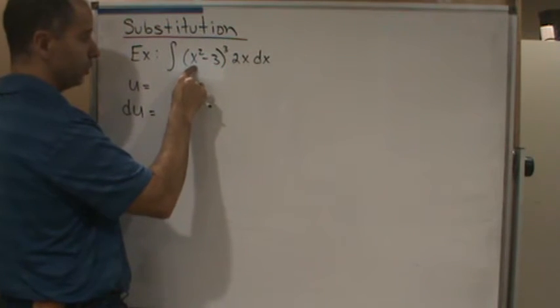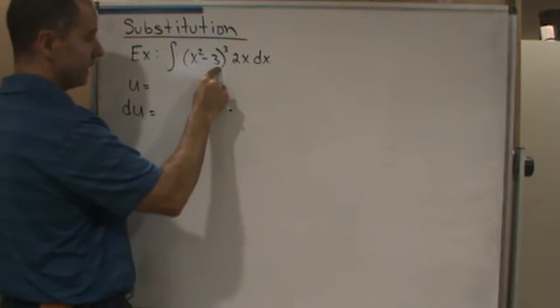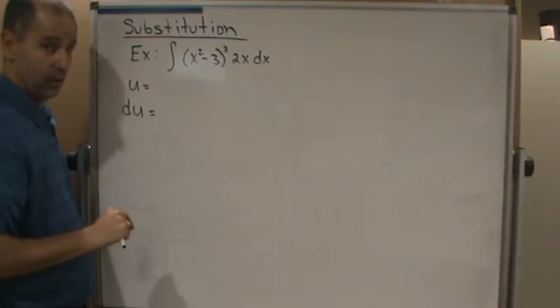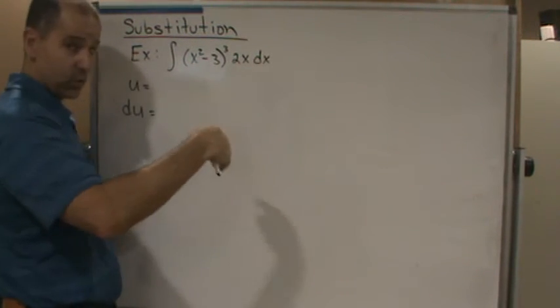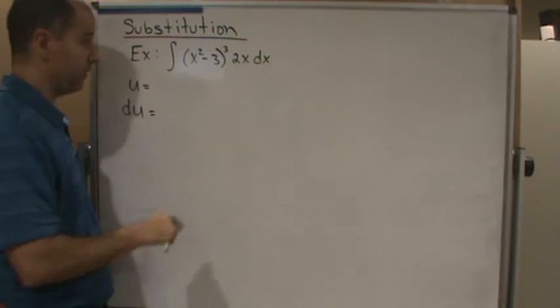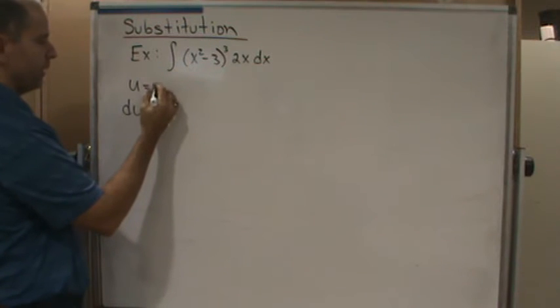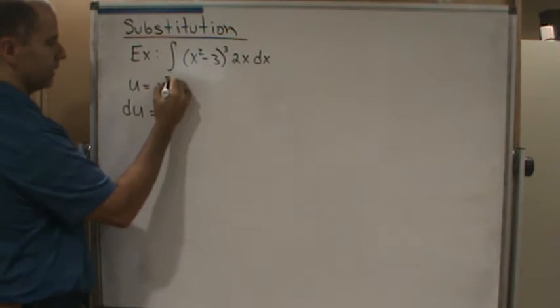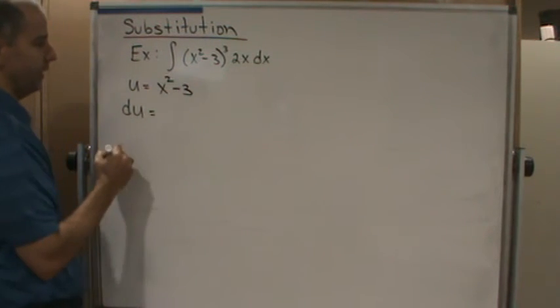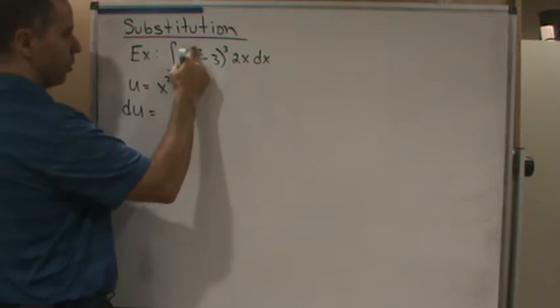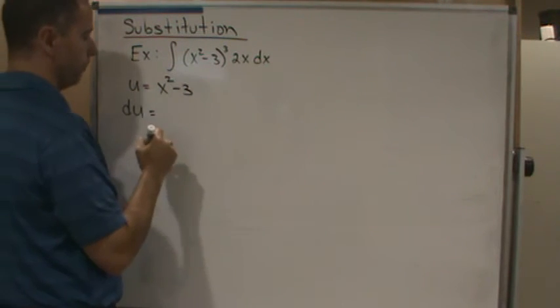Since the constant goes to zero when I take the derivative, there's no reason why not to include this. So I'm going to make u equal to x squared minus three, because then I can make this whole thing equal to u.